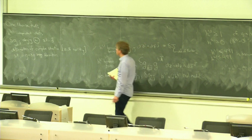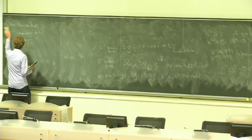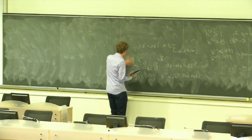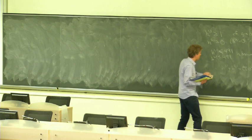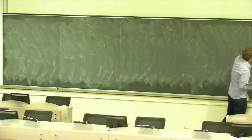Any final questions about Calabi-Yau threefolds and their moduli before we start talking about cosmology and experimental constraints? Rather than discussing internal geometry, we'll talk about cosmology for a little bit.